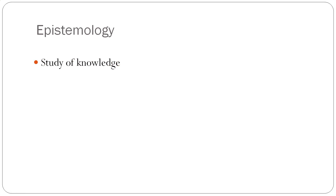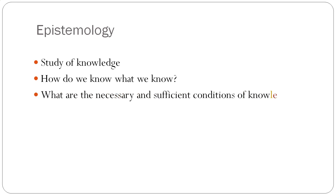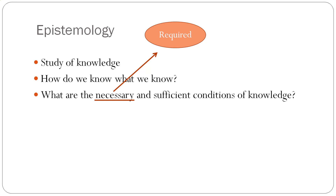So how is this connected to epistemology? Epistemology is the study of knowledge — this is the question of how do we know what we know, how can we go about knowing what we know. In other words, what are the necessary and sufficient conditions of knowledge? Here we mean necessary as in required — what are the required conditions of knowledge — and by sufficient we mean enough, like what is the enough level in terms of knowledge.